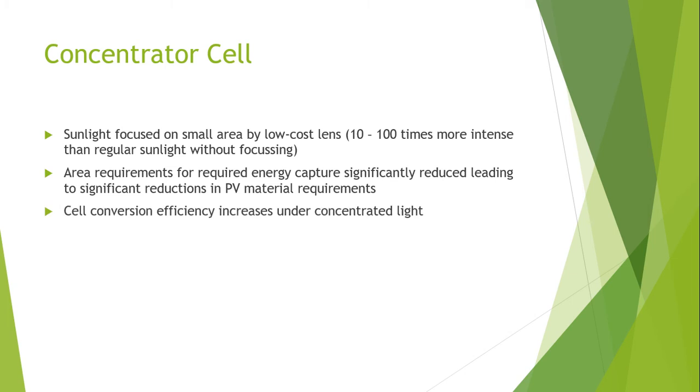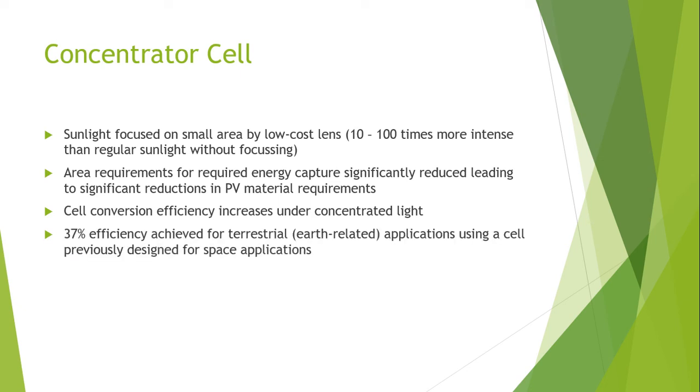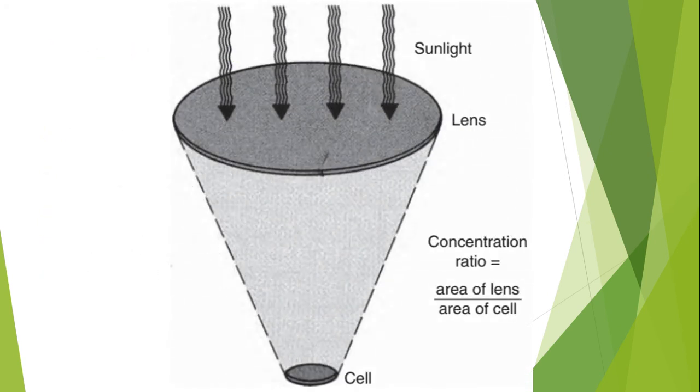Cell conversion efficiency increases under concentrated sunlight because more photons are focused on the solar cell. 37 percent efficiency has been achieved for terrestrial applications using cells previously designed for space applications. The main disadvantage for using concentration cells is the concentrating optics, the glass that you use to concentrate the photons on the photovoltaic cell adds cost and increases the price.